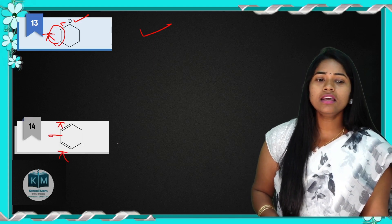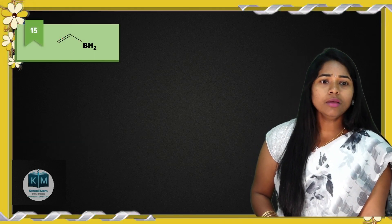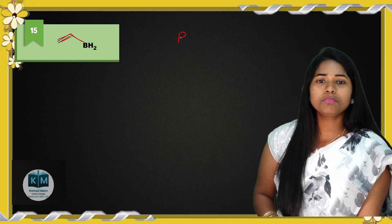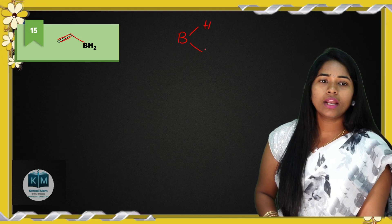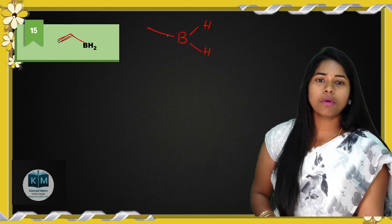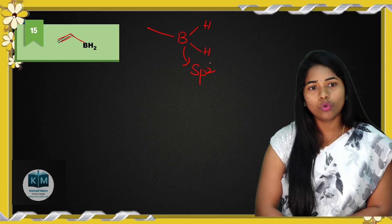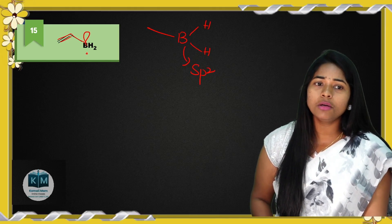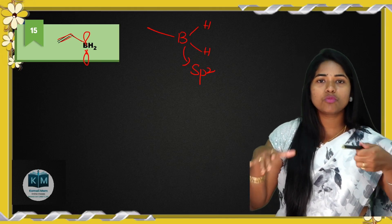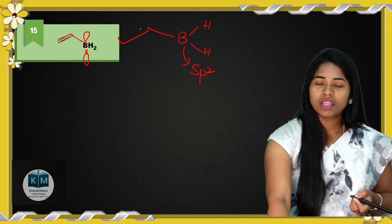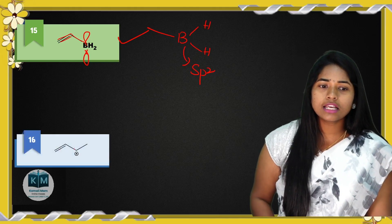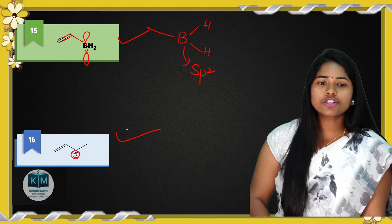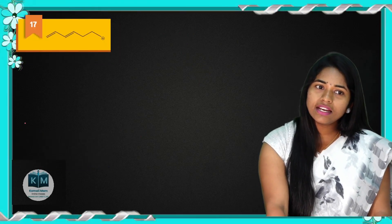Question 13: pi–sigma–pi — conjugated system. Question 14: pi–sigma and BH2 — boron has sp2 hybridization (one sigma to each H and one to carbon), so one vacant p orbital is present. Therefore pi–sigma–vacant p — it shows conjugation. Question 15: pi–sigma–positive charge — it shows conjugation. Any difficulty? Question 16: pi–pi–pi–pi–sigma–pi — conjugation. Question 17: pi–sigma–sigma — no conjugation.